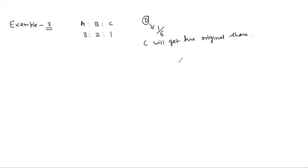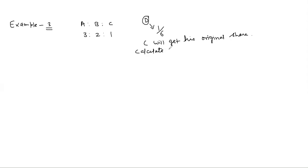C's original share means C is not ready to sacrifice at the time of D's admission. When a new partner is admitted, old partners have to sacrifice. A new partner can be admitted only with the consent of all existing partners. C did not want D admitted, but when A and B asked C, he said his share would decrease. A and B told C not to sacrifice — they would both sacrifice on his behalf. C agreed. So when all partners agree, only then D can be admitted. C will get his original share and will not sacrifice. Now calculate new ratio and sacrificing ratio.